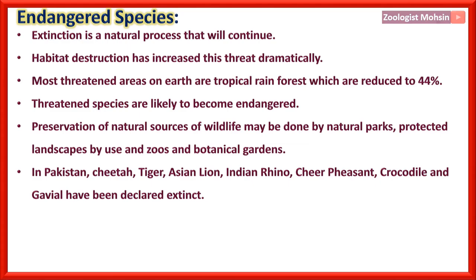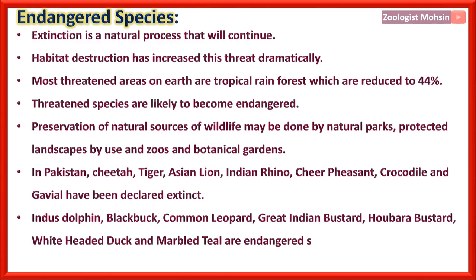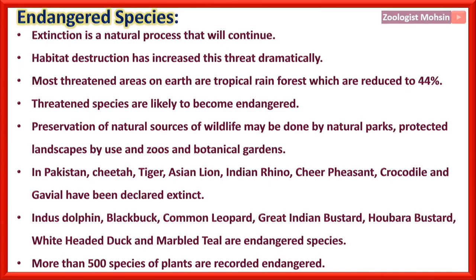Endangered species in Pakistan include: Indus dolphin, black buck, common leopard, great Indian bustard, houbara bustard, white-headed duck, and marbled teal. These are very important to remember. More than 500 species of plants are also recorded as endangered in Pakistan.